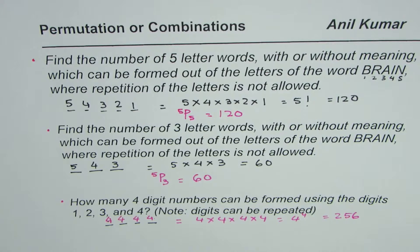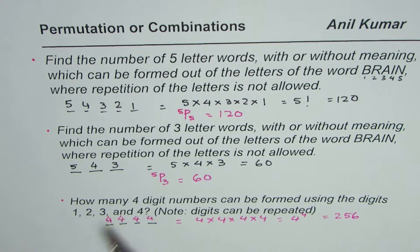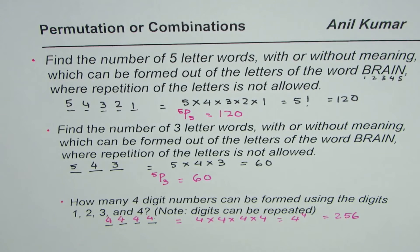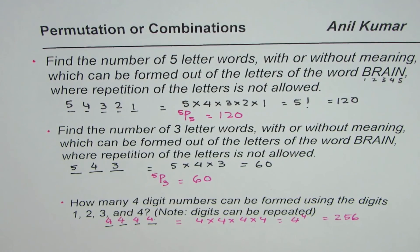In cases where repetition is allowed, the answer will be n to the power of r, where r is the number of places. That is how we answer questions based on permutations. We'll take a few more examples with special conditions in finding the number of ways — go through those videos to get the whole concept of permutations. I'm Anil Kumar — you can subscribe and share my videos. Thank you and all the best.